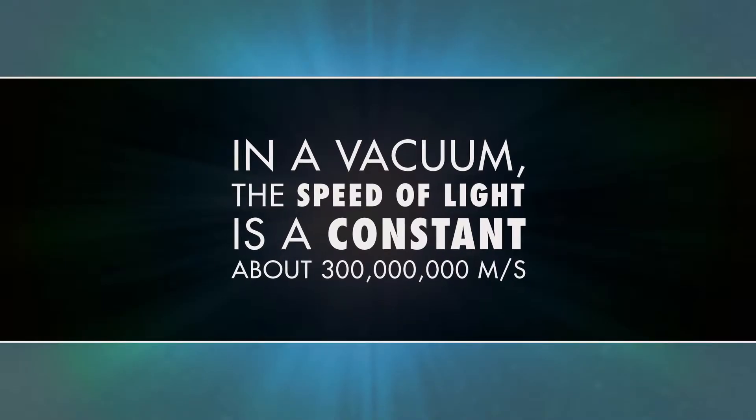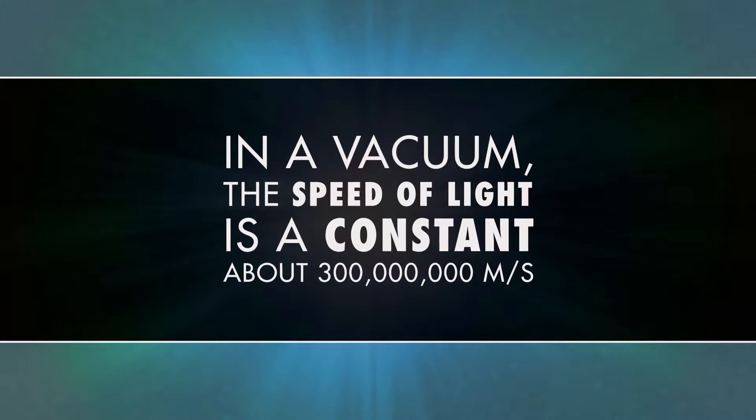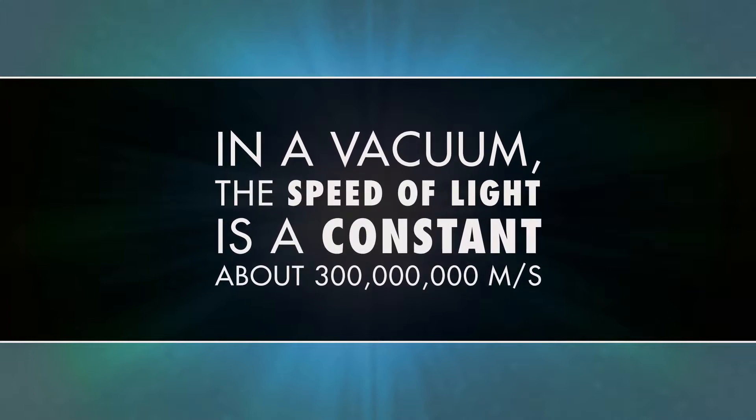First, it's important to know that light is a form of energy and has a wavelength and velocity. In a vacuum, the speed of light is a constant — about 300 million meters per second.